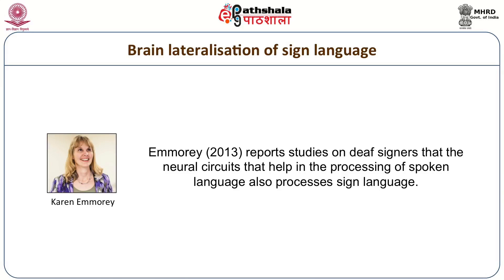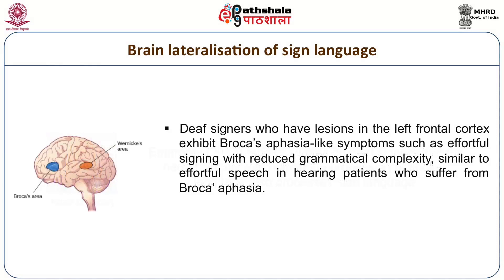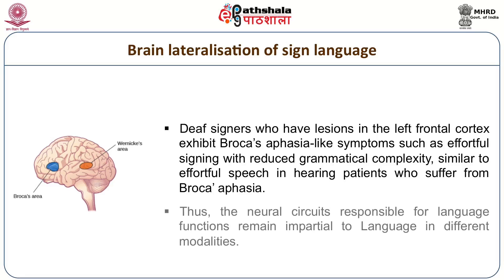What does MRA say? MRA reports studies on deaf signers showing that the neural circuits that help in the processing of spoken language also process sign language. Deaf signers who have lesions in the left frontal cortex exhibit Broca's aphasia-like symptoms such as effortful signing. This shows that the neural circuits responsible for language functions remain impartial to language in different modalities.